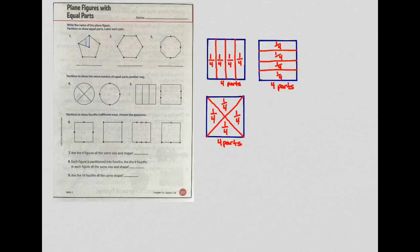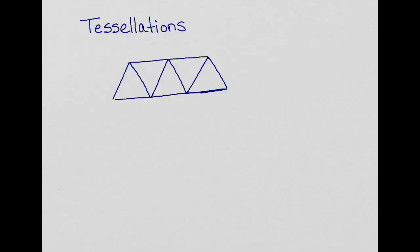But I do need to talk to you about one more thing, a thing called tessellations. Now, tessellations is a pattern of shapes that repeats, but there are no gaps or overlaps. You can see triangles here. You have an upright triangle, an upside down, an upright, an upside down, and an upright. And they are touching. Their sides are all touching. There are no gaps. There are no overlaps. That is a tessellation.